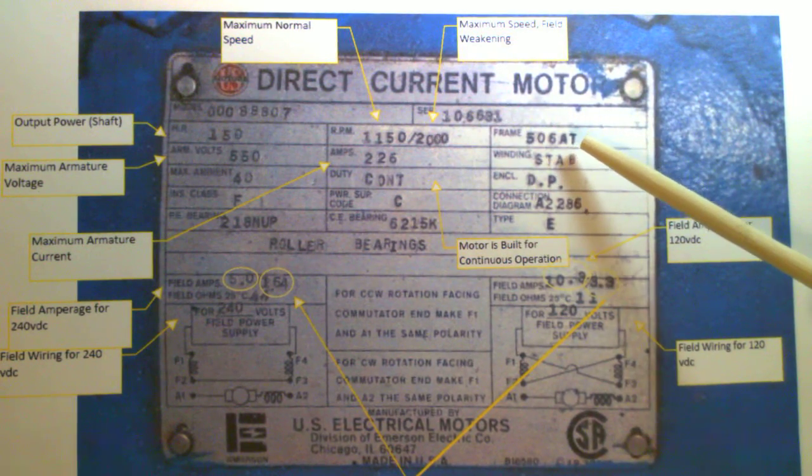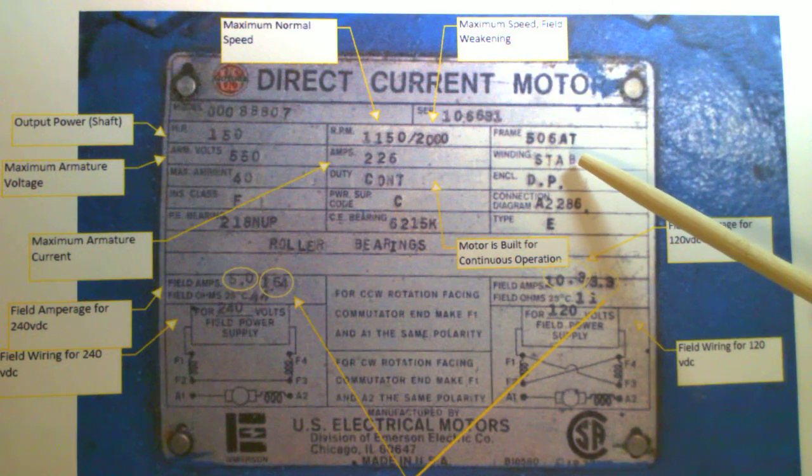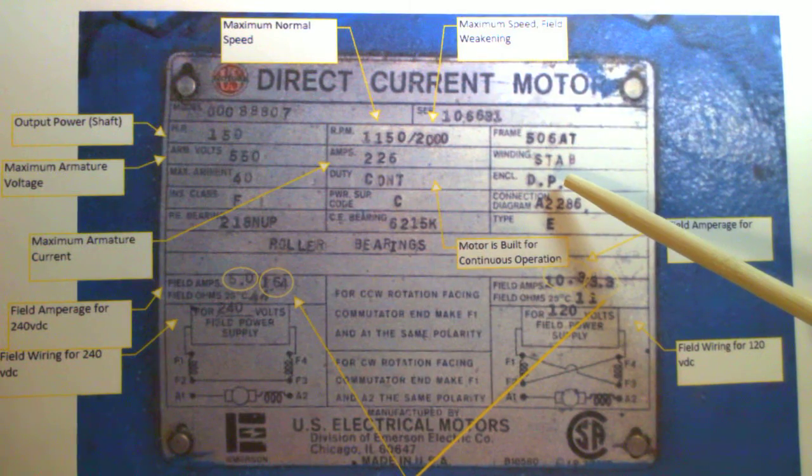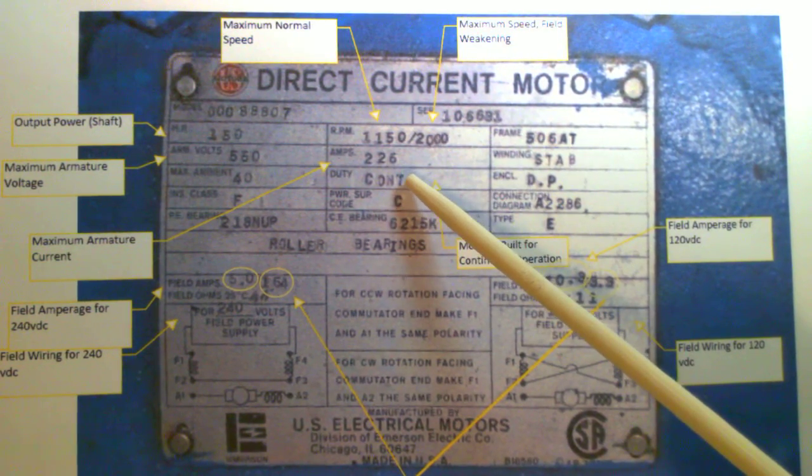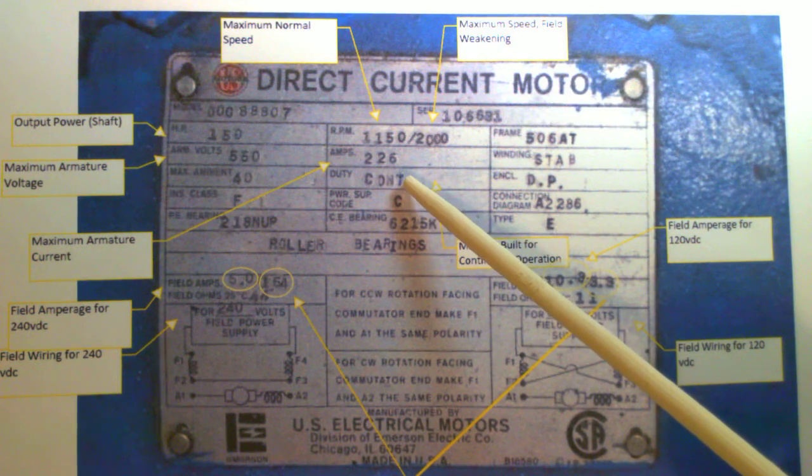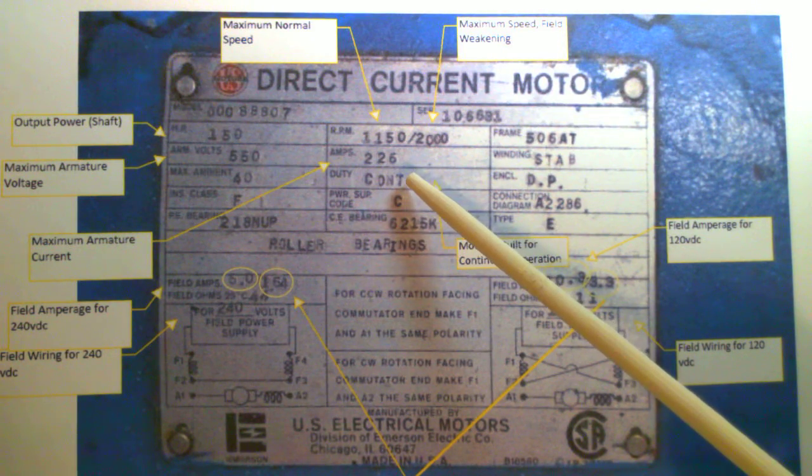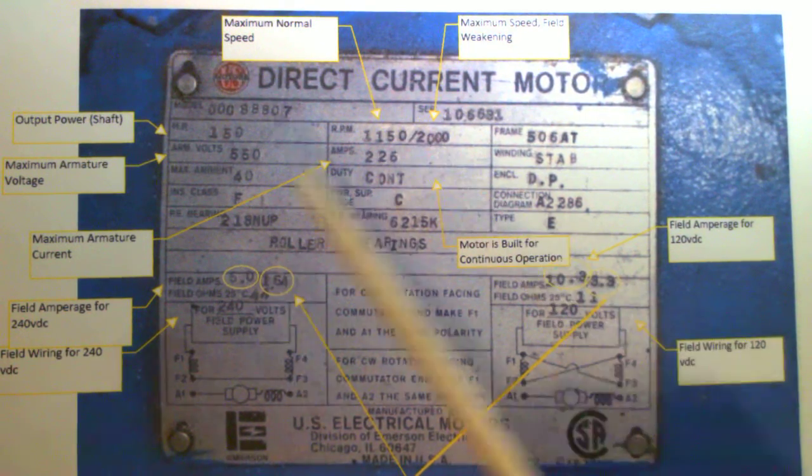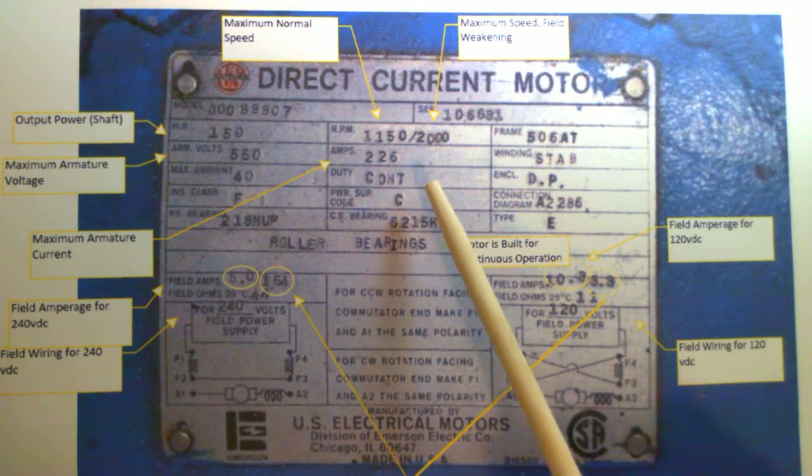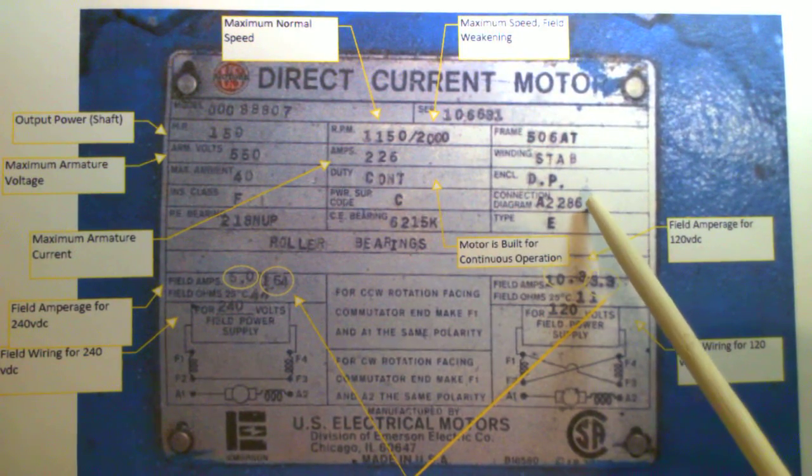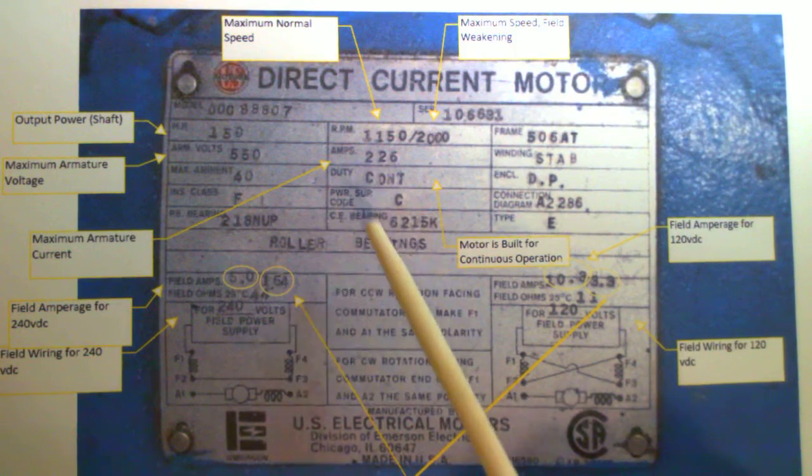I'm not going to talk about the frame. I'm not going to talk about what stationary B means for the winding. The enclosure, this motor can come in a variety of enclosures. It happens to be DP drip proof. We won't worry about that right now. We will say that continuous duty means that this motor is meant to run in a stable mode. You can change the speeds, but it is designed to operate continuously around the clock. Not meant for a lot of irregular or interruptible or inconsistent starts and stops. It's meant for continuous duty. Not going to talk about the insulation class, nor the power supply code, connection diagram. You will need the manufacturer's manual to interpret that. Not going to worry about the bearings.